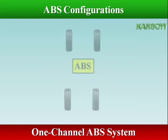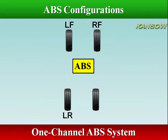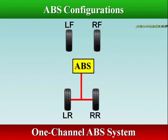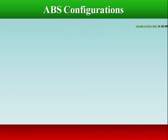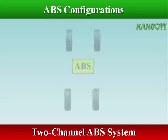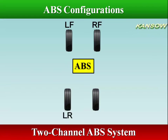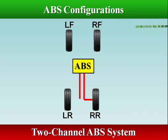The 1-channel 2-wheel system is the simplest, with one circuit that controls hydraulic pressure to both rear wheels. This system uses one speed sensor bolted to the axle housing. A 2-channel 2-wheel system has a wheel speed sensor and hydraulic circuit dedicated to each rear brake circuit.